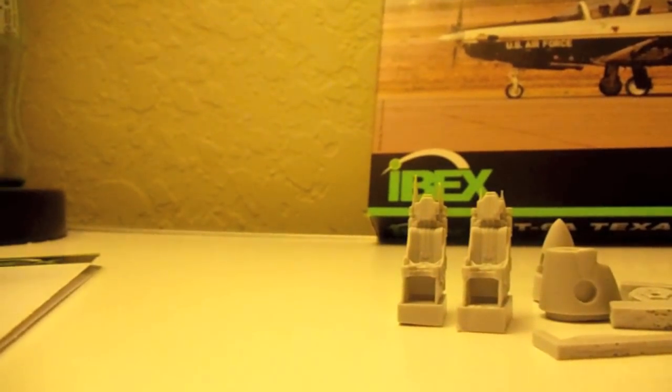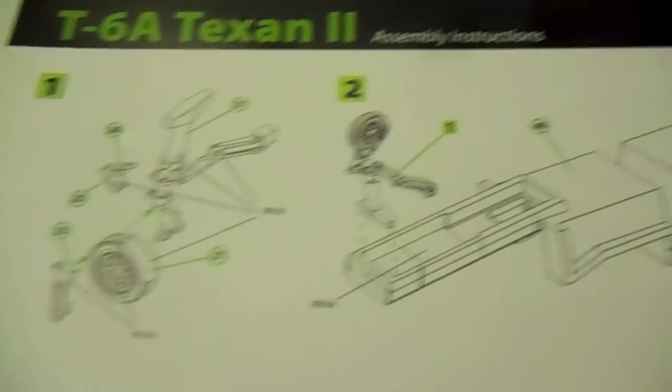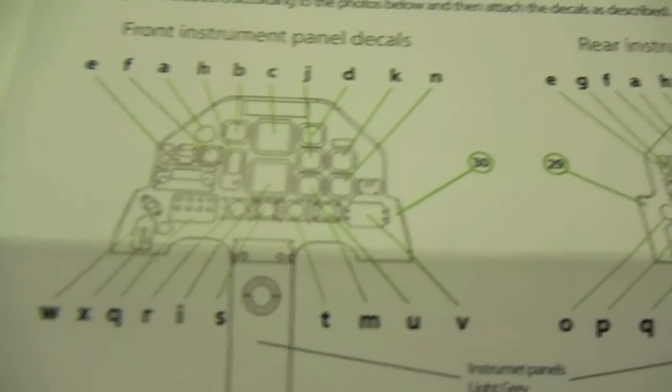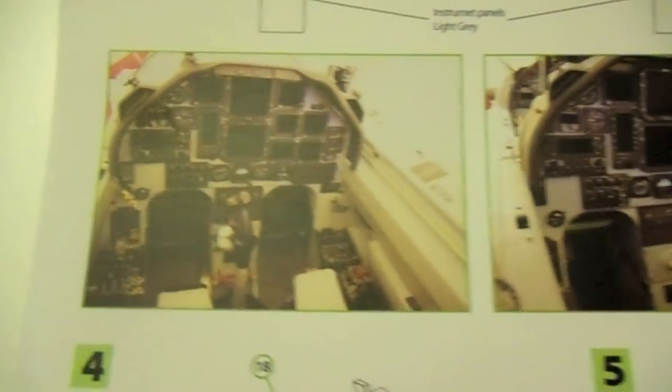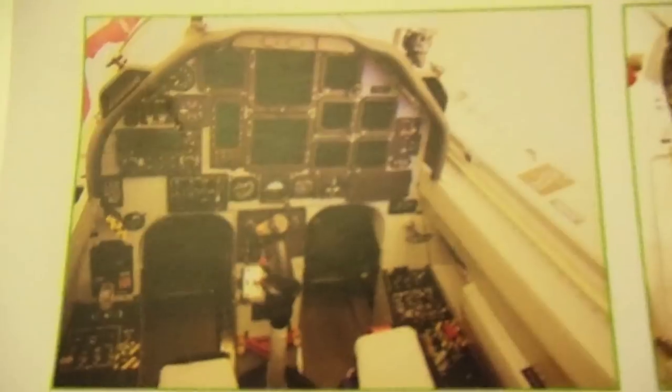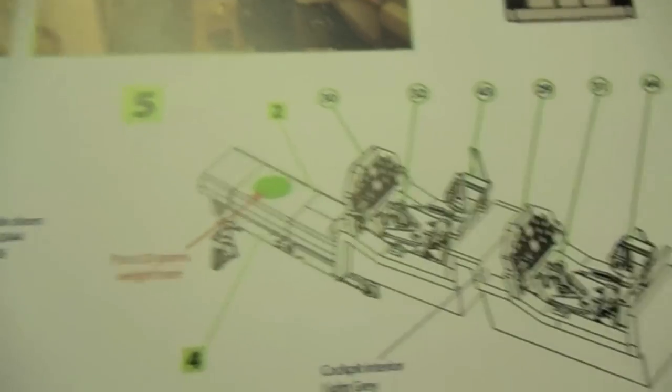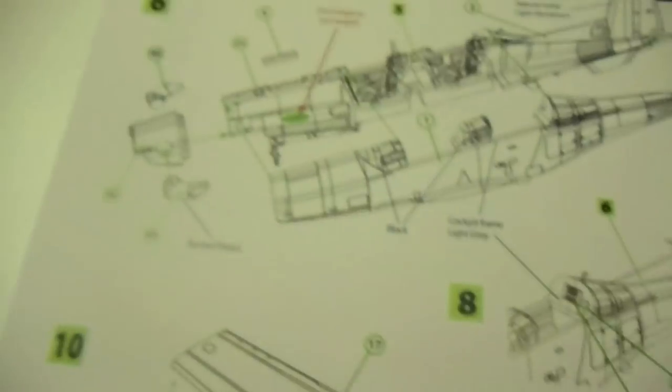Alright, so let's go over the instruction booklet. This is the first page with the assembly of the gear and the bottom of the cockpit. Then we got the decal placements for the control panels and some more on the cockpit, and they actually give us reference photos. That's the front part of the cockpit and that is the back part. Then we got some pieces to the bottom of the cockpit, and then the top of the cockpit and the whole thing being put together with the resin seats and all that good stuff.